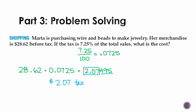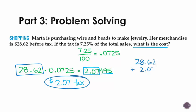It asks the total cost of this. So that means I need to take the price that I paid and add the tax onto it. So we have $28.62 plus the $2.07. We ended up paying $30.69 for the wire and beads.